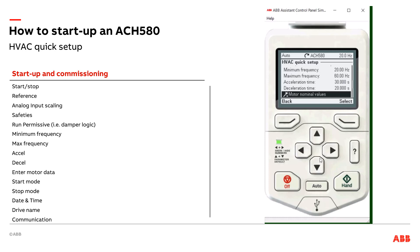Motor nominal values — this is where I'd go in and enter my motor nameplate data: what is my RPM, what is my amps, what are my horsepower. Fun fact: factory defaults are configured for the Baldor Super E motors. So if you left everything at default and forgot to set this and you had those Baldor Super E's, the drive's already set up appropriately. But it's always a good habit to go in there and set your motor data.